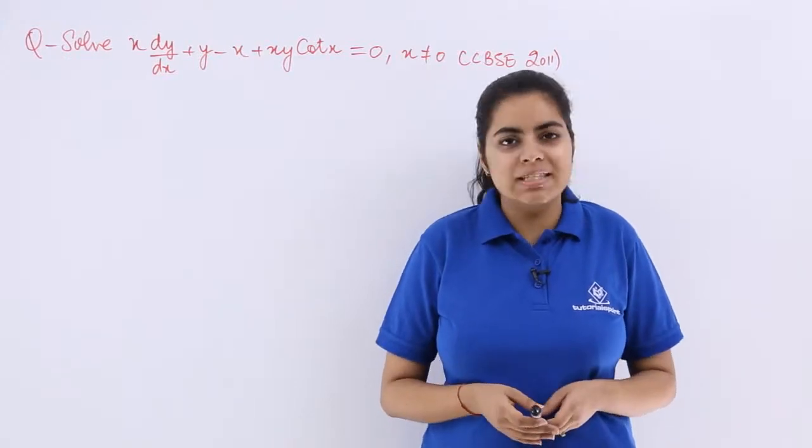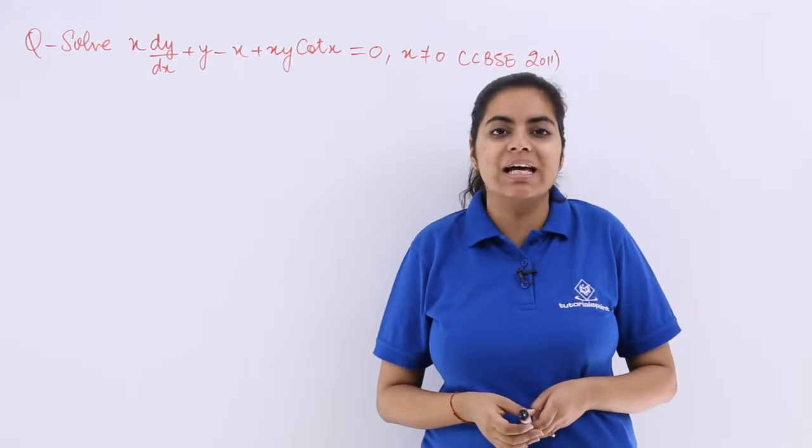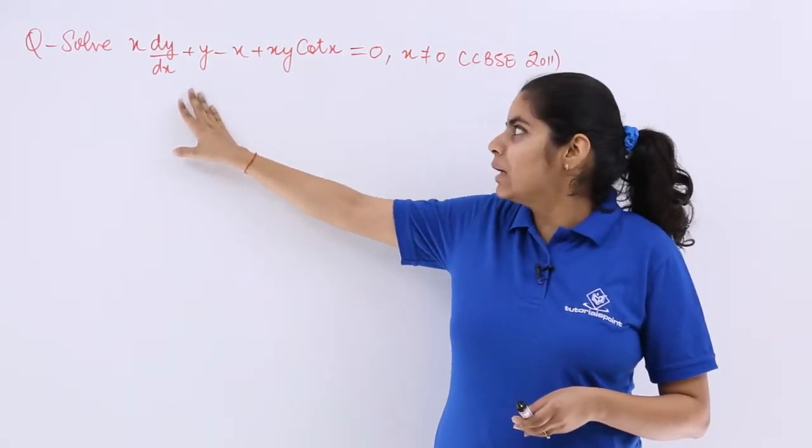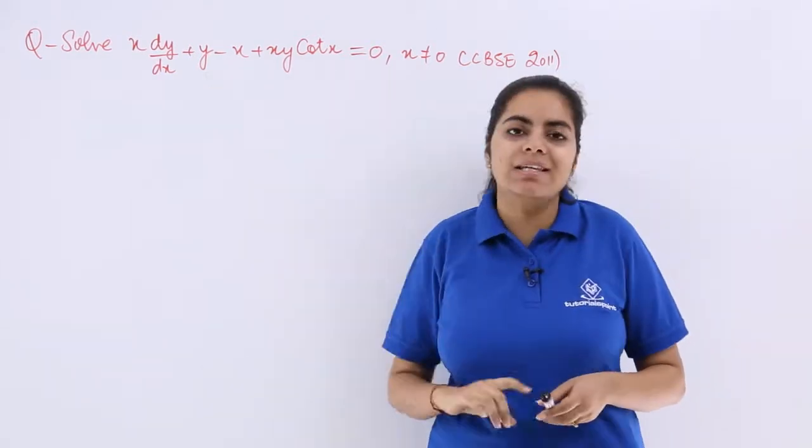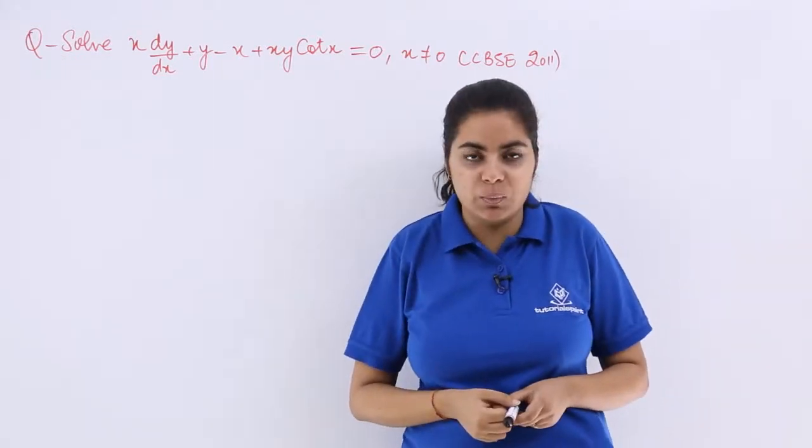This question is in your NCERT books and it is also a part of CBSE previous examination year 2011. The question is: solve x dy/dx + y - x + xy cot x = 0, and one condition is given that x is not equal to 0.